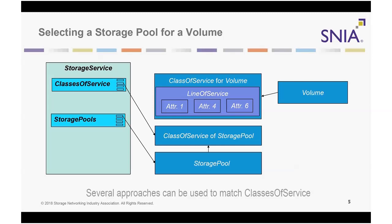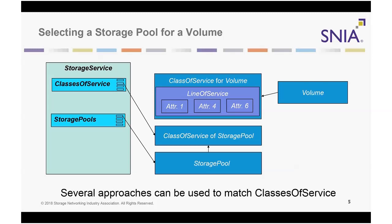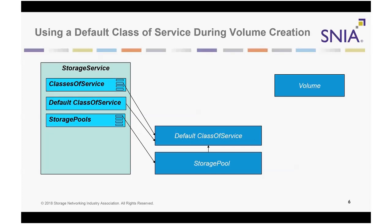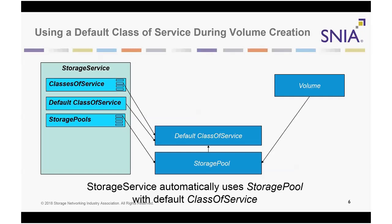Several approaches can be used to match classes of service. The simplest way to use Swordfish is to establish a default class of service for unsophisticated storage consumers. This allows any storage pool that supports the default to be automatically selected during the creation of volumes, file systems, or object stores without explicit reference to any class of service. The storage service uses the default class of service if none is specified when a volume is created by posting it to the volume collection in the storage service. A default class of service may also be assigned to a storage pool for use when a volume is created by posting it to the allocated volumes collection in a storage pool or to the volumes collection in a storage or storage group resource.